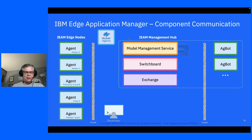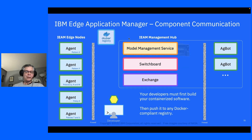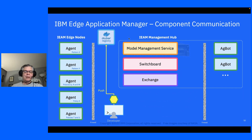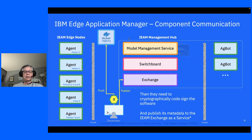A developer writing code must containerize it — built into a Docker container — and then push it to a Docker-compliant registry, either public or private with credentials, wherever appropriate to publish your containers. The next step is to cryptographically code-sign the software. Once done, you publish the metadata including that signature and any deployment information to the Exchange component in the management hub.